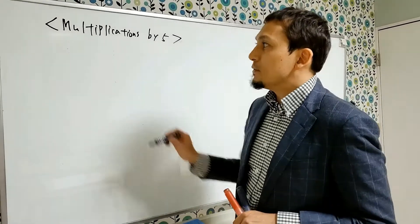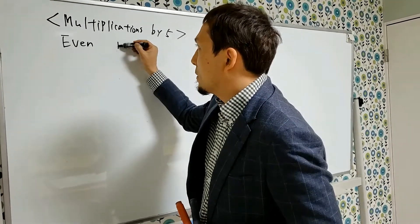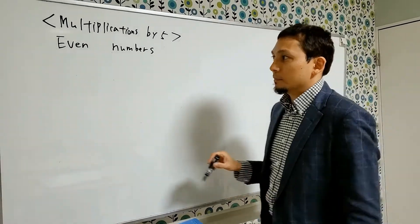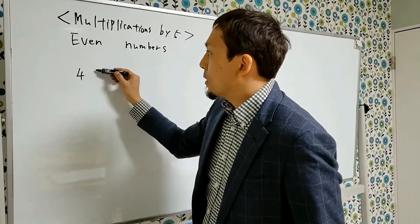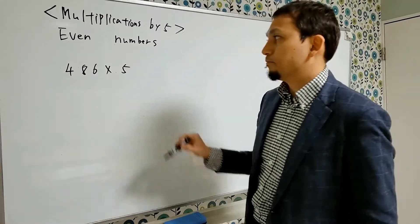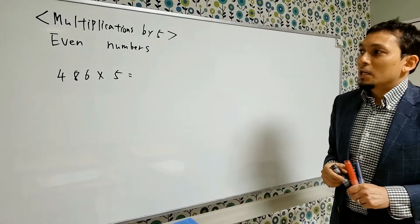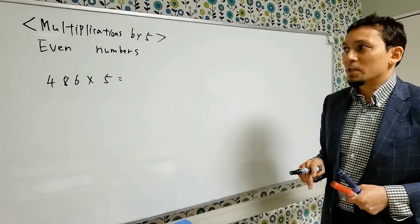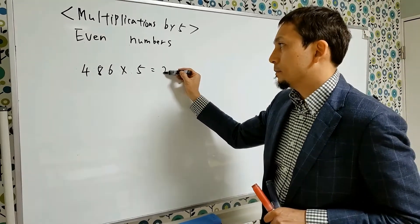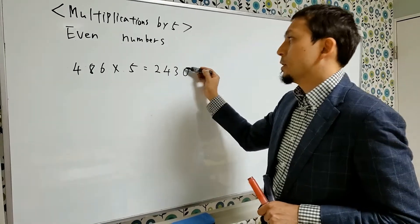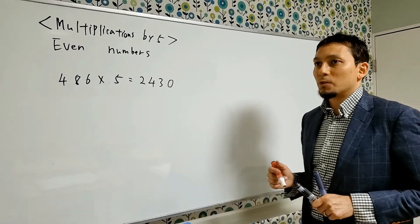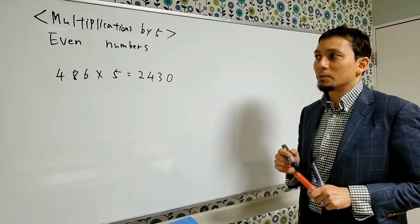But I'll use only even numbers today. Now, look at this example: 486 times 5. If you use a special way, you can do this multiplication very quickly. Actually, the answer to this question is 2430. Didn't you think it was very quick? Okay, so I'll teach you how to do it now.